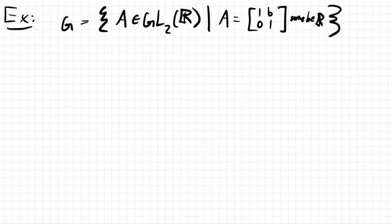And so now, what I'm going to show is that G is isomorphic—there's an isomorphism to R plus, the real numbers with addition, the additive group of the real numbers.